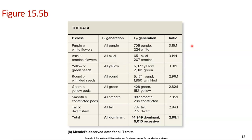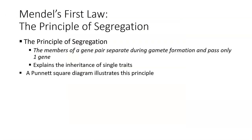Gregor Mendel did this with many different traits — not just flower color, but green vs. wrinkled seeds, round vs. wrinkled seeds, green vs. yellow pods, tall vs. short, smooth vs. constricted. He consistently saw all dominant traits in F1 and a 3:1 ratio in F2.